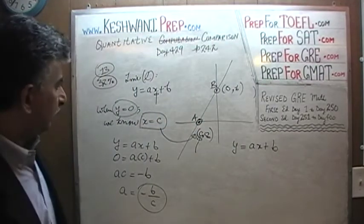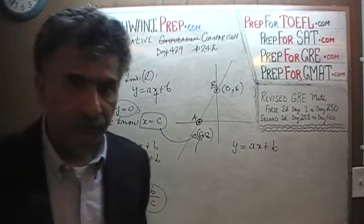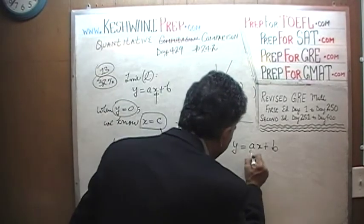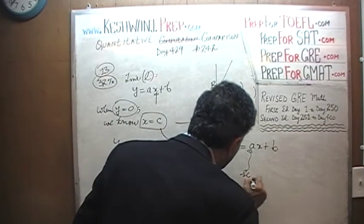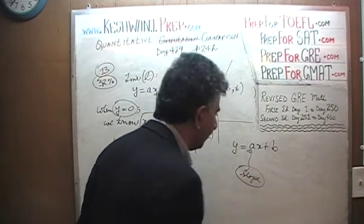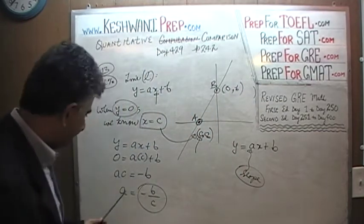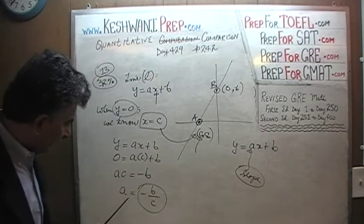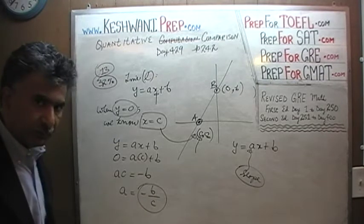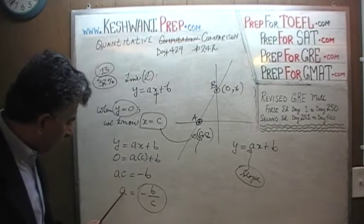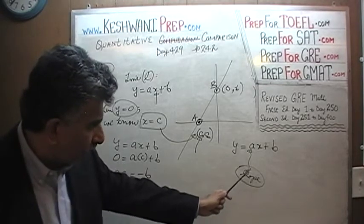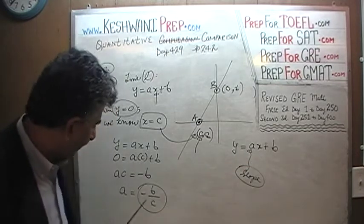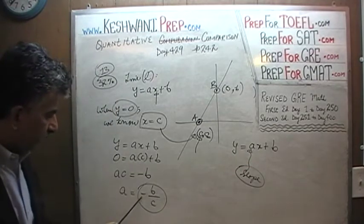When the equation is written in the form y equals ax plus b, we all know that a represents the slope of the line. We just found that a equals negative b over c, which is the slope.